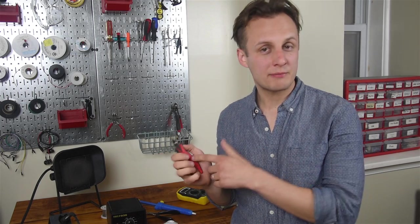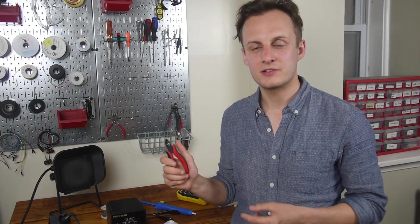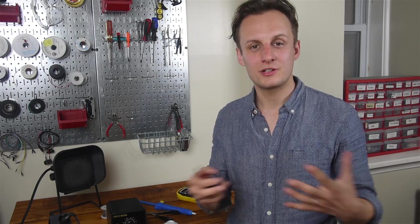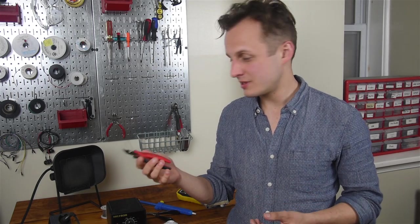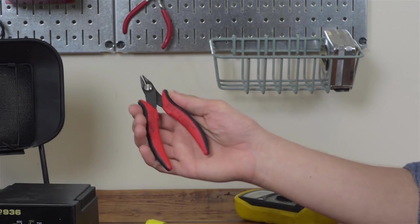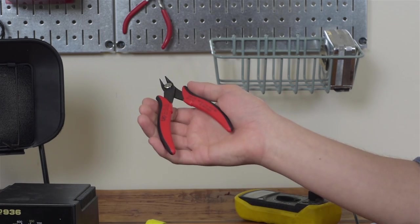Now the last tool you absolutely need is a pair of wire cutters. This is how you remove the excess leads after you've soldered something so they don't short together. And just make sure that it's something with a small tip like this so you can get into in-between components. These are five bucks, not much to it.